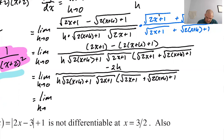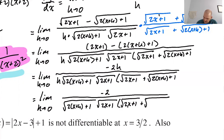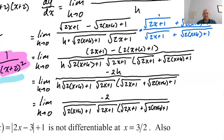So let's do it one more time. Limit as h approaches 0 of negative 2 over — we lose the h — and we just get radical 2 times the quantity x plus h plus 1, times radical 2x plus 1, times the quantity radical 2x plus 1 plus radical 2 times the quantity x plus h plus 1. Now let h equal 0.